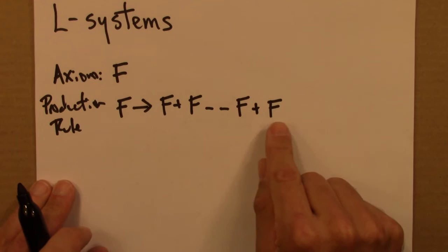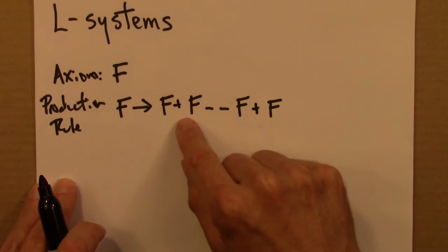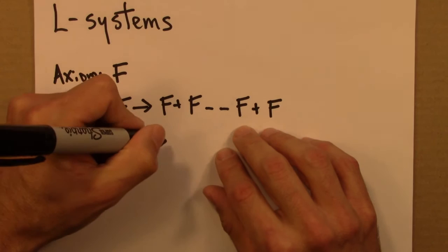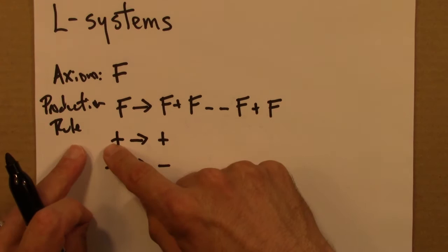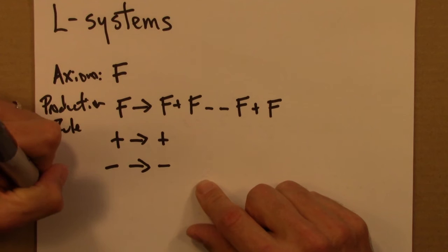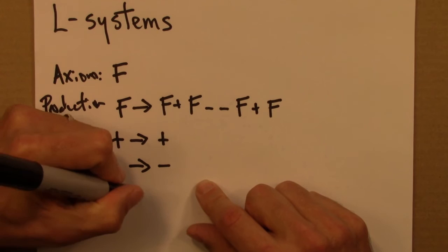There's some other production rules that we need, which says that plus gets turned into plus and minus gets turned into minus. And then there would be a parameter, which in this case would be 60 degrees. What in the world is all this stuff?